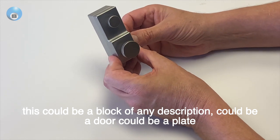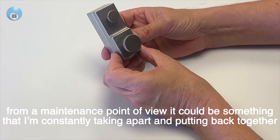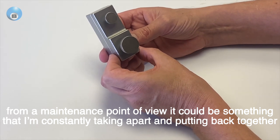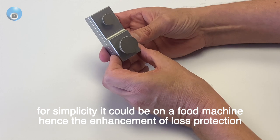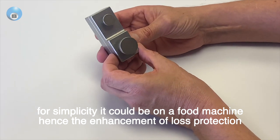This could be any description—could be a door, could be a plate from a maintenance point of view, could be something that I'm constantly taking apart and putting back together. For simplicity, it could be on a food machine. It's the enhancement of loss protection.